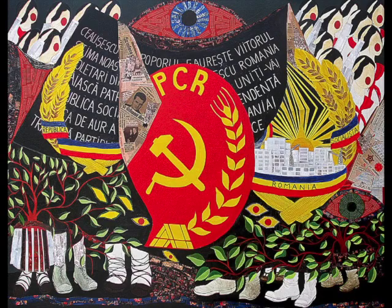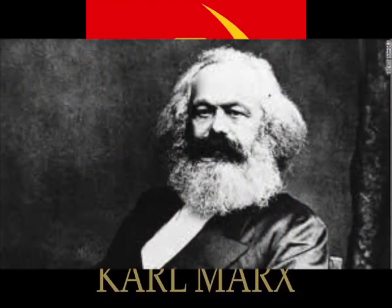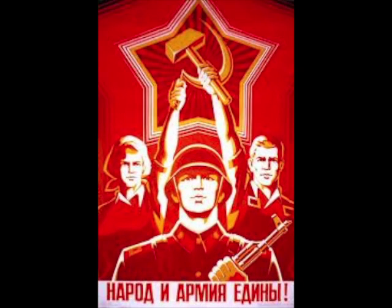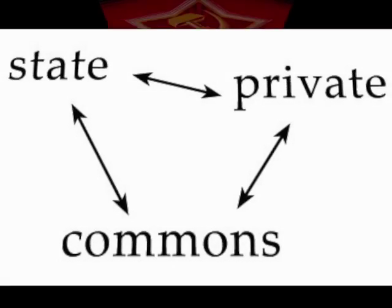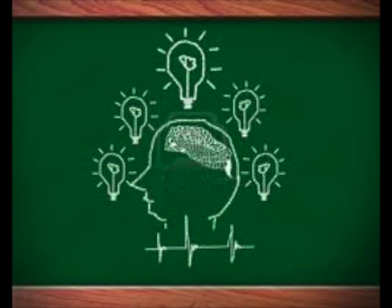What is communism, you may ask? Communism is derived from the work of the Communist Manifesto. Communism is an economic theory that leads to a society in which all property is publicly owned, and each person works and is paid according to their abilities and needs.